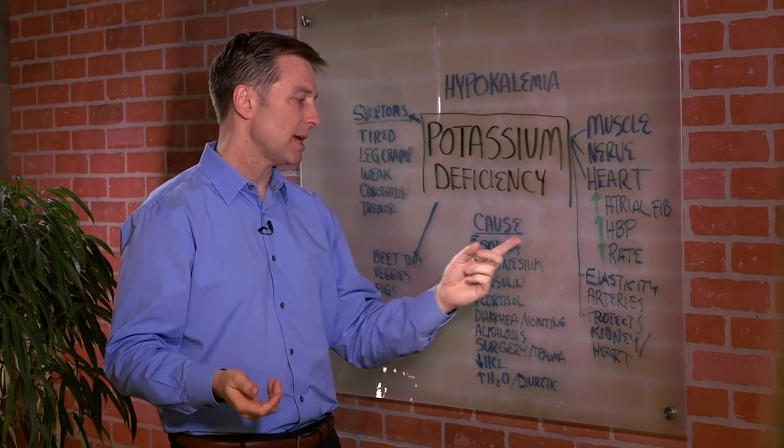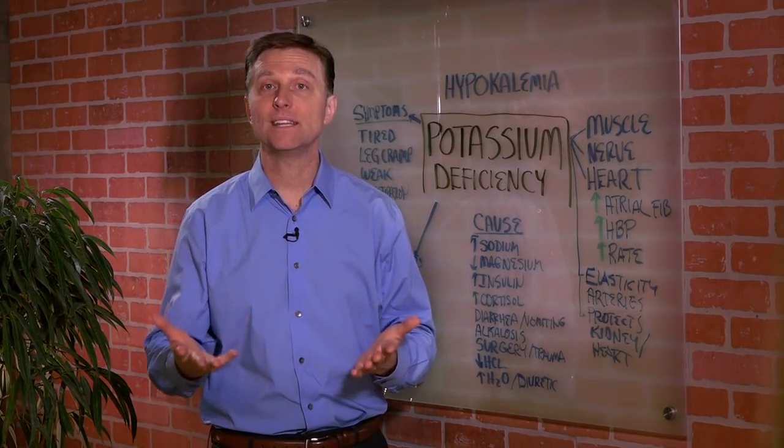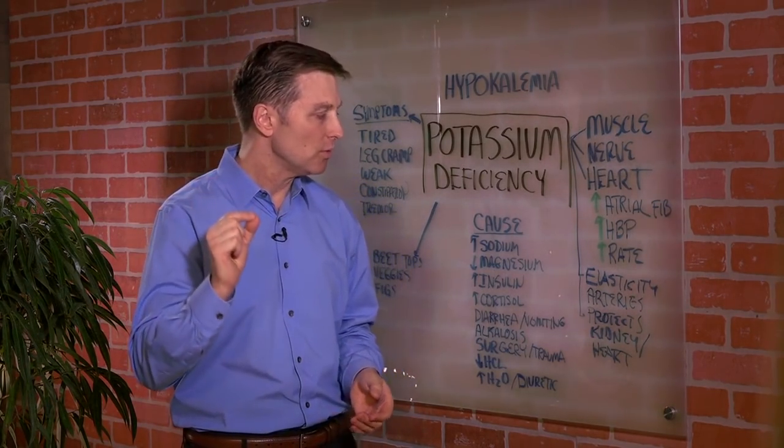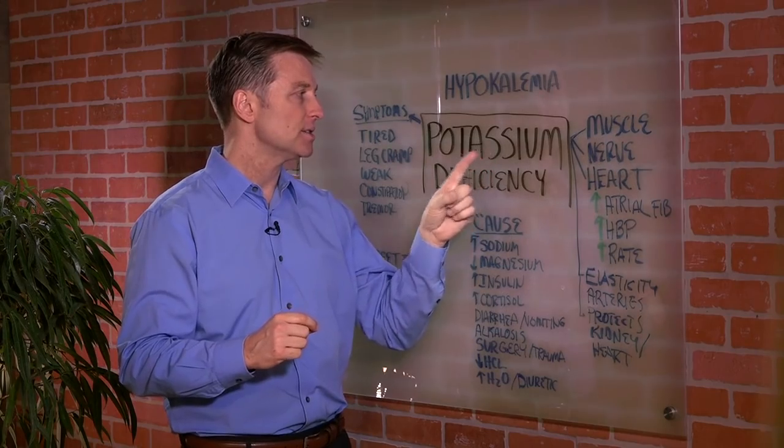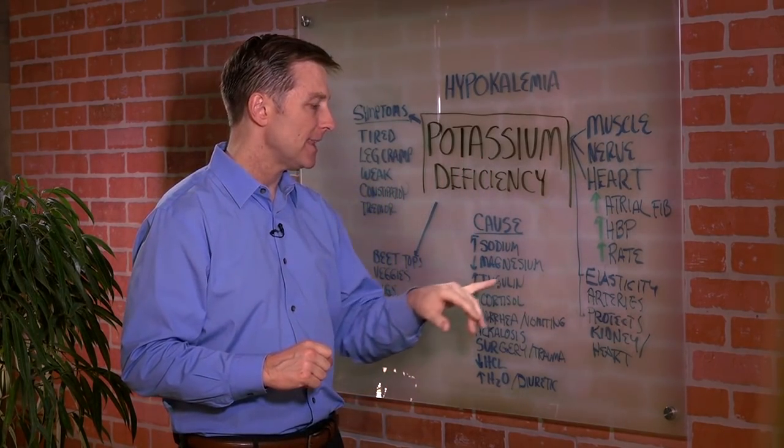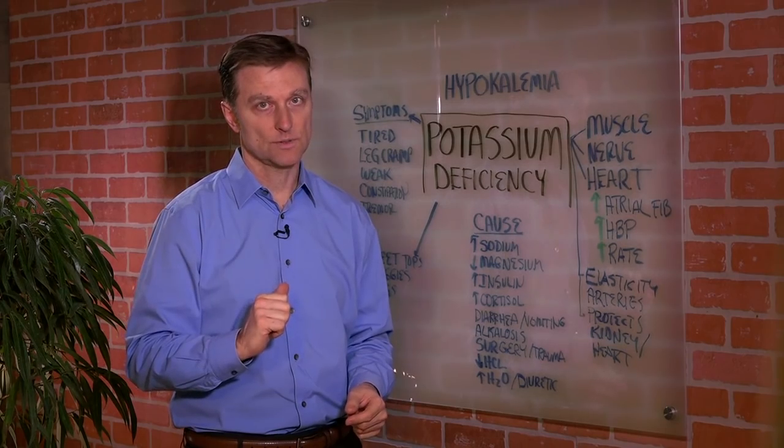But maybe it's not potassium. Maybe it's low magnesium. So magnesium is necessary to keep potassium in the right balance. And that comes from vegetables.